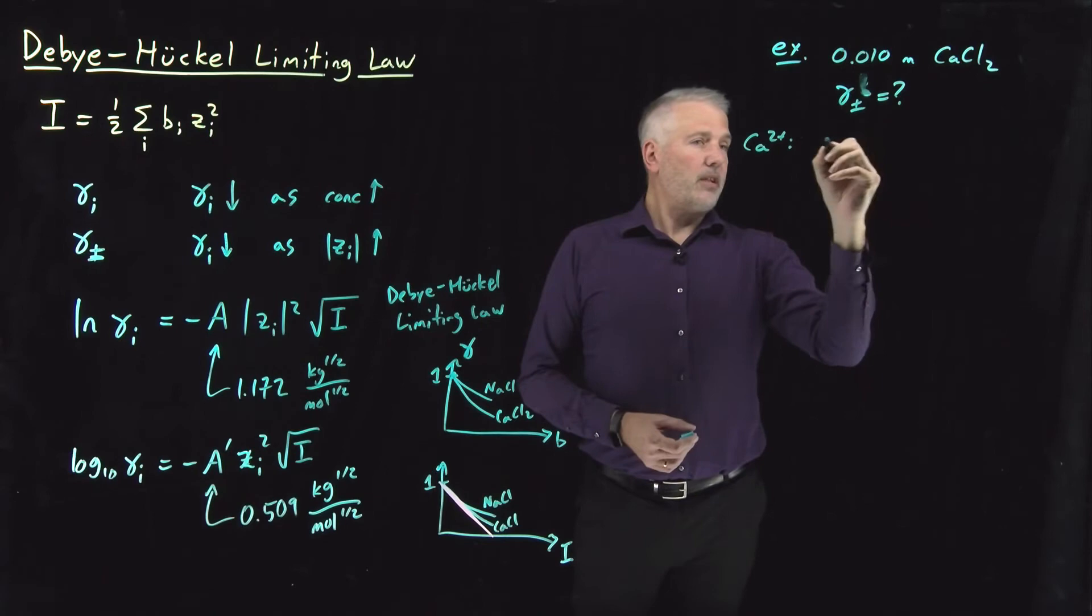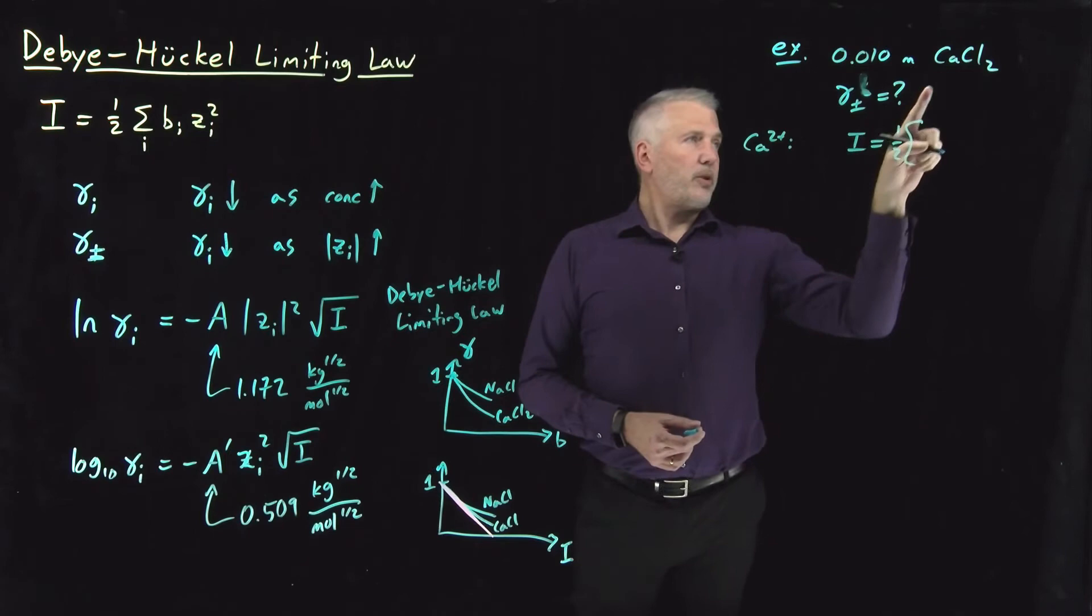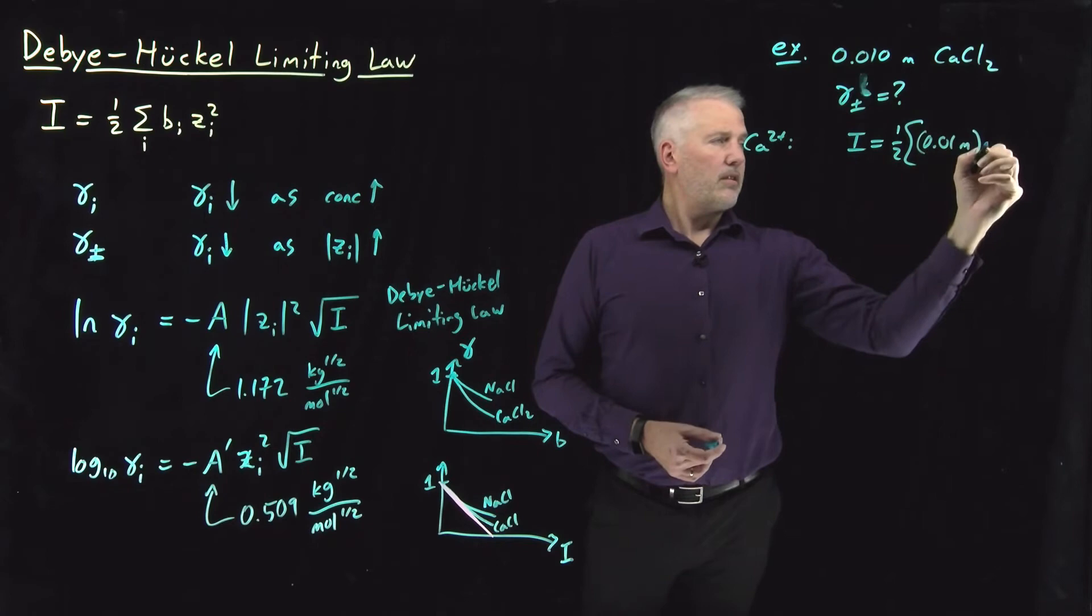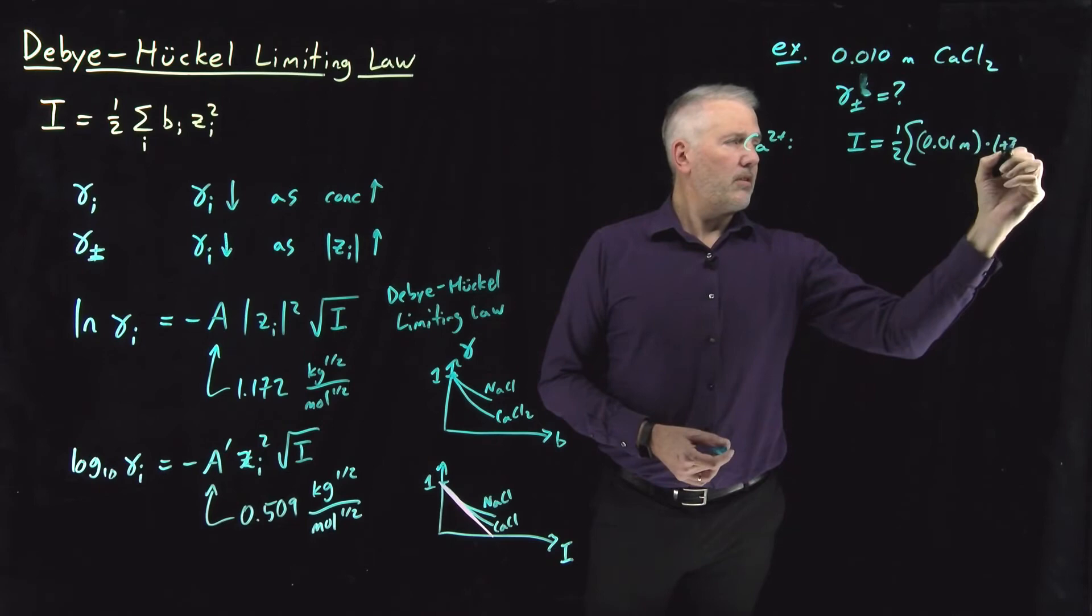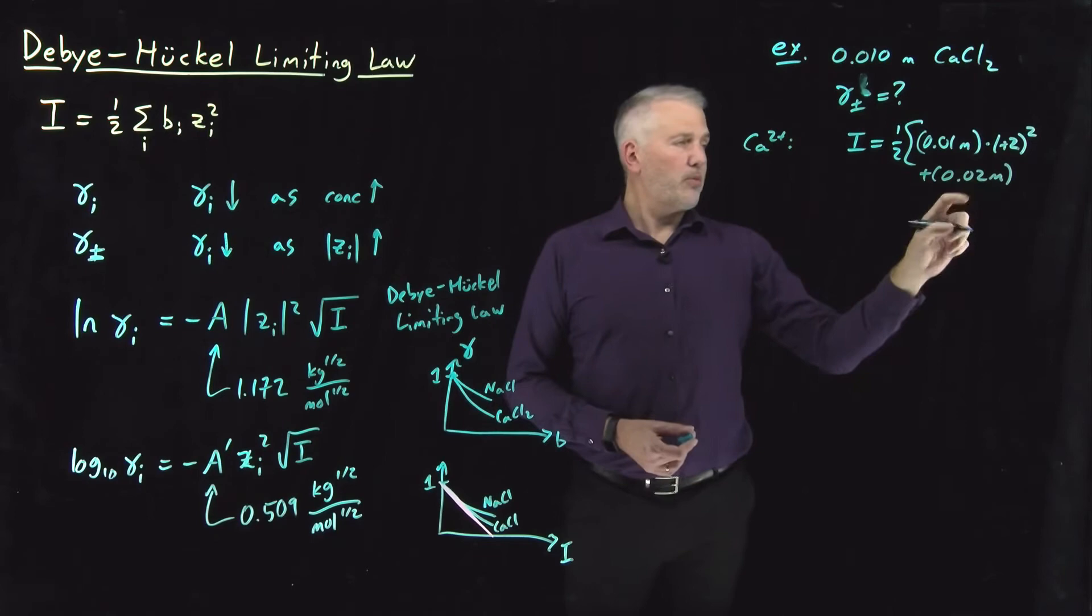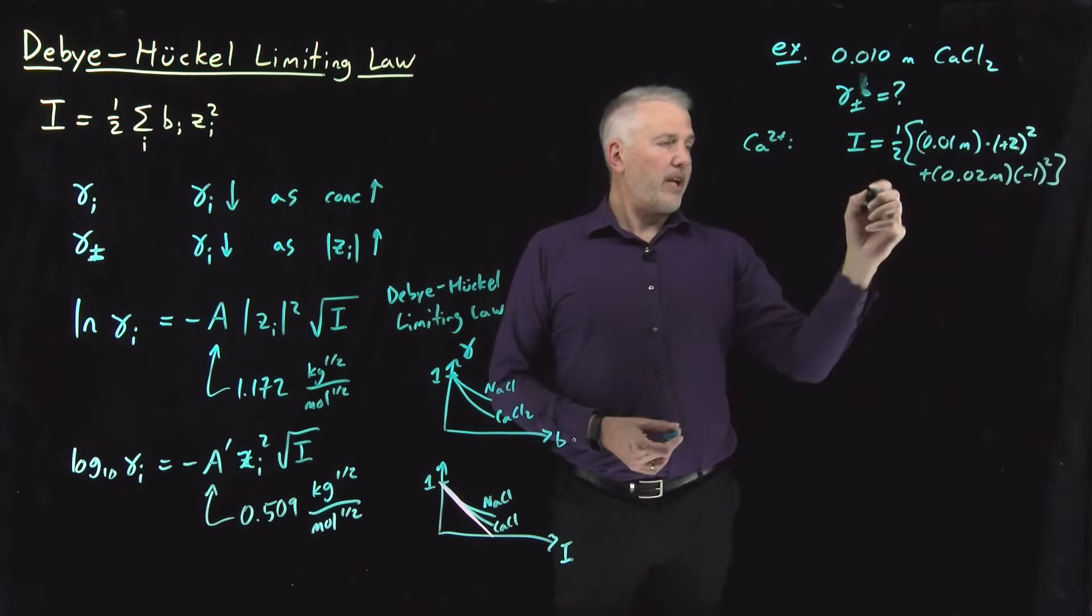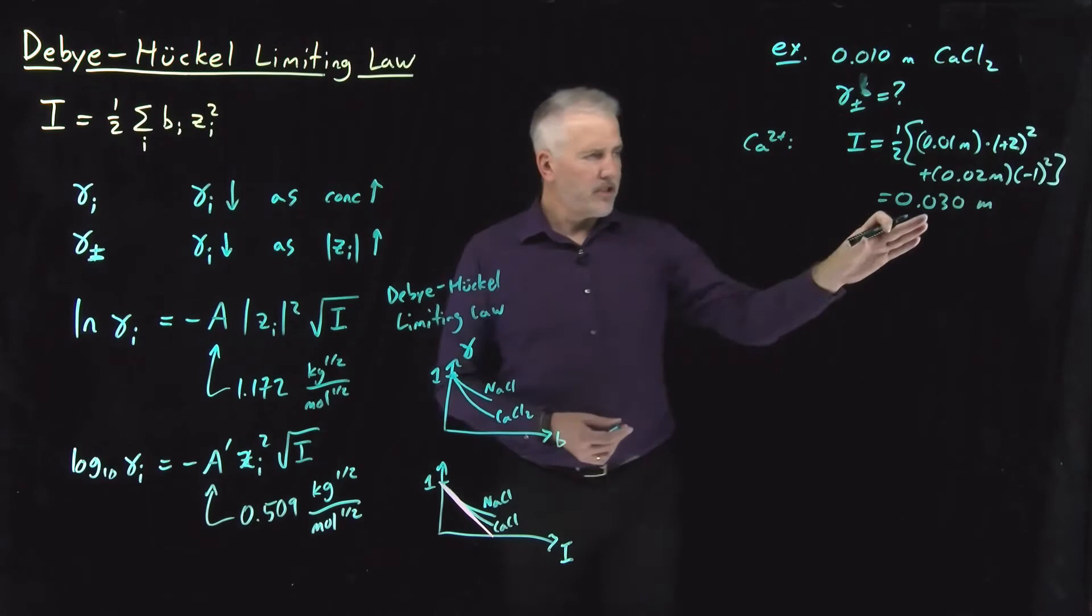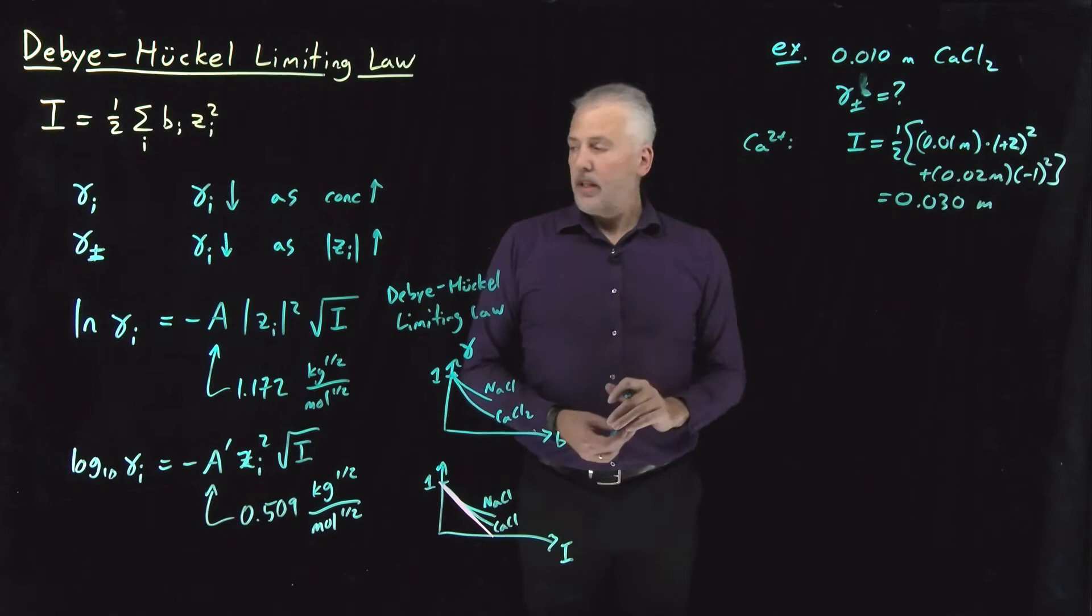one-half concentration of cation times ionic charge squared and concentration of anion. Two chlorides times 0.01 molar gives me 0.02 molar times ionic charge squared. 0.04 plus 0.02 halved. That ionic strength is going to give me 0.03 molal, which is very similar to an example we did in a previous video lecture. So that's the ionic strength.